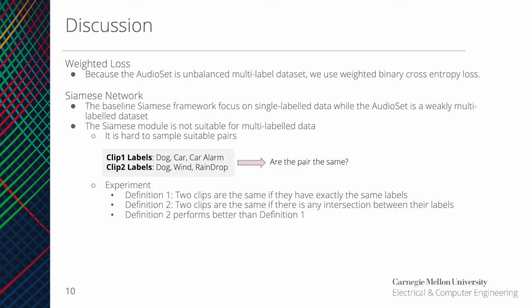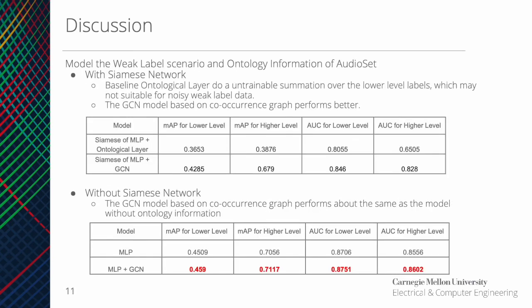The first observation is that the top two levels of Audioset labels are very unbalanced, so we use a weighted loss to get better performance. Another reason for the results is due to how we use the Siamese network on Audioset. For the Siamese net, we need to define similar or different subclasses and superclasses; however, Audioset is a multi-label dataset and it is not easy to define clips into this definition. So we also do experiments for networks with and without the Siamese net, where we can see that models without Siamese achieve better results. For models with Siamese, the GCN can model ontology information better than the untrainable baseline ontology layer. For models without Siamese, there is improvement using GCN over no ontology information, but it is still limited.